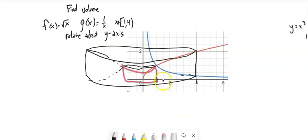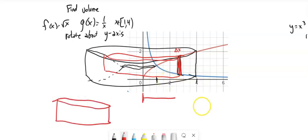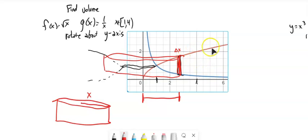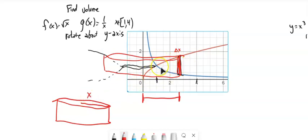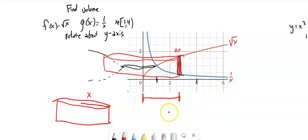We're going around the y-axis, so let's think about what our cylinder looks like. There's my change in x. This comes around to form a cylinder. If I grab that, my radius is x. But now the height — notice the height is bound between two functions. As x gets bigger or smaller, it's still the difference between those two functions. This function is √x and this function is 1/x, so the height is √x minus 1/x.